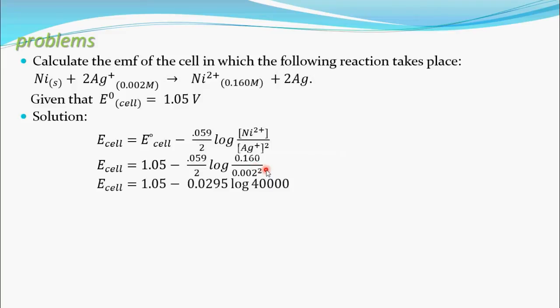Now try to simplify this one. When you simplify this thing you will get 40,000, and 0.059 by 2 is 0.0295, and everything is same, kept constant. See, you can write this 40,000 as 4 into 10 to the power 4.